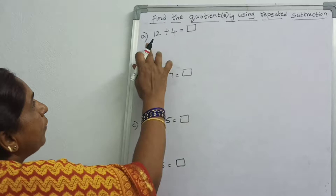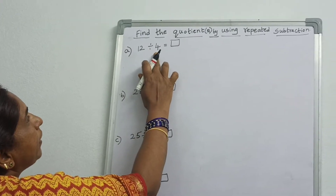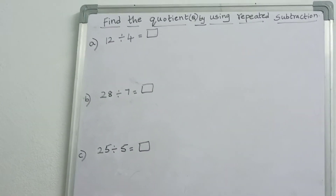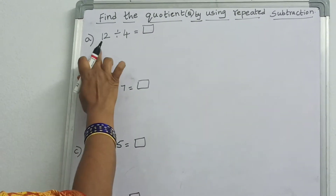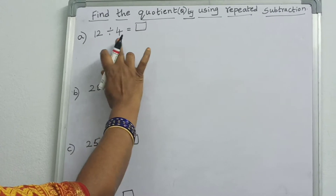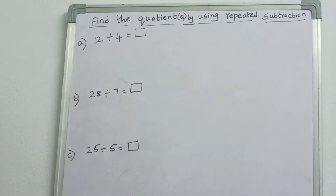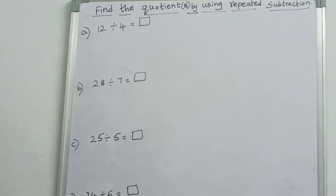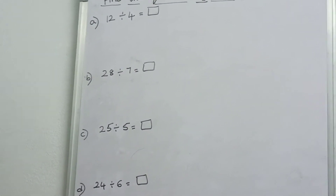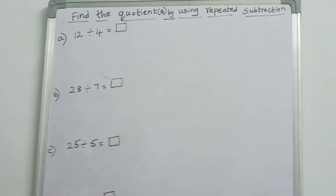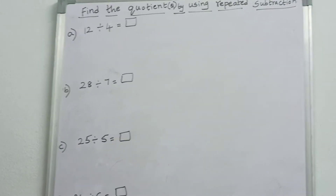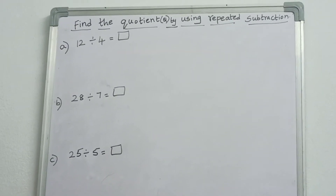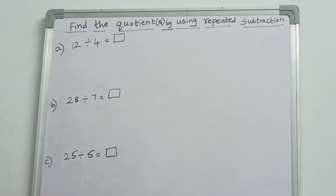See here. 12 divided by 4 is equal to — 12 is the dividend, 4 is the divisor, and we have to find the quotient. So how will we find the quotient by using repeated subtraction?